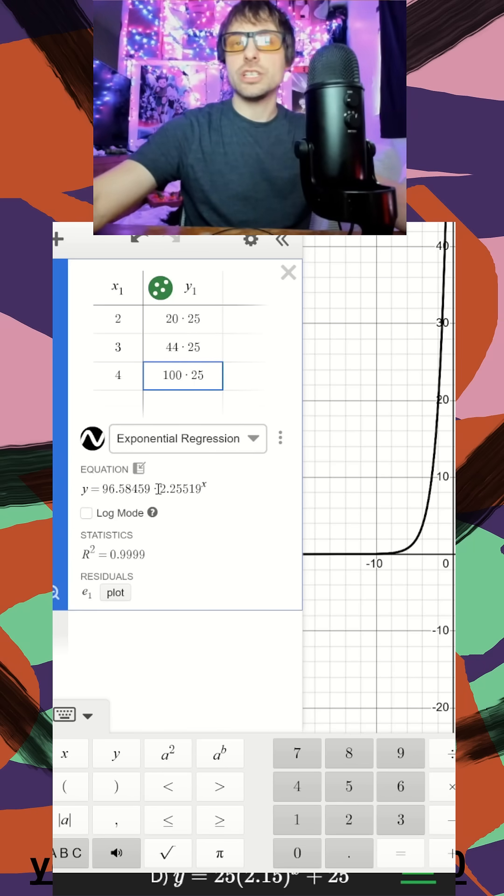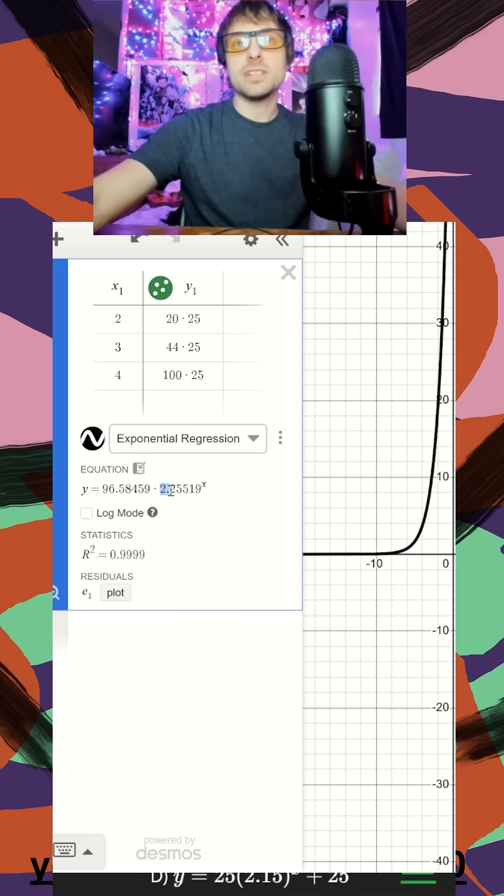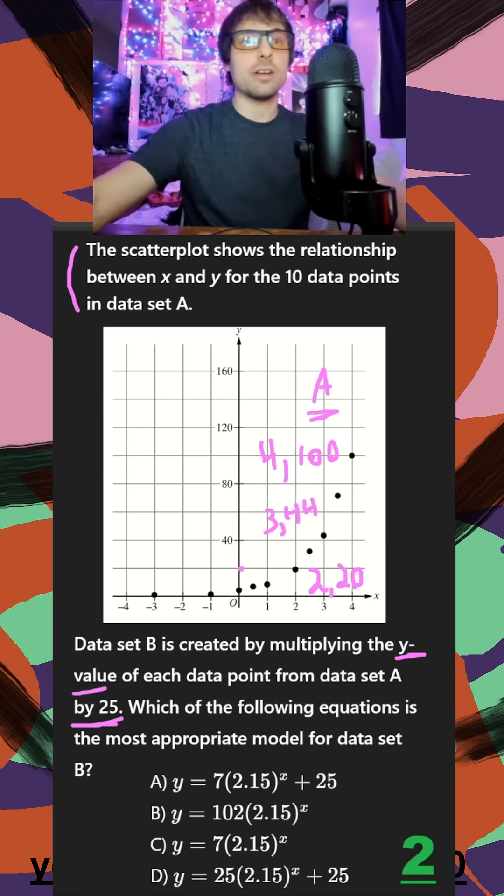I should see my new function here. This is our exponential function with something close to 100 times something close to 2.2. We'll see if we see that in our answers.